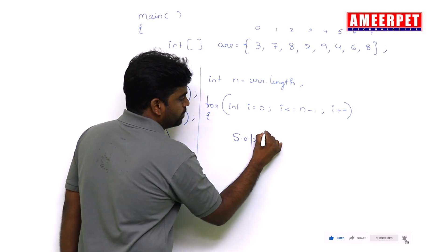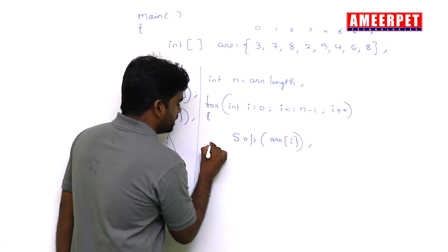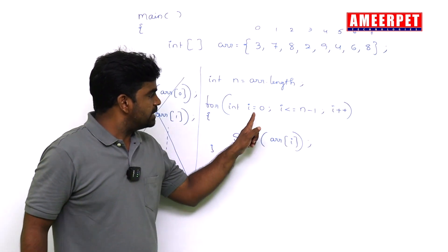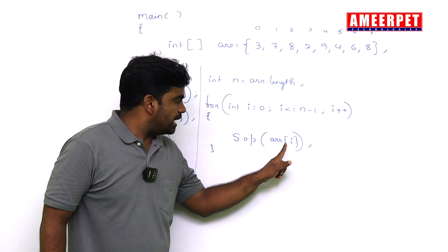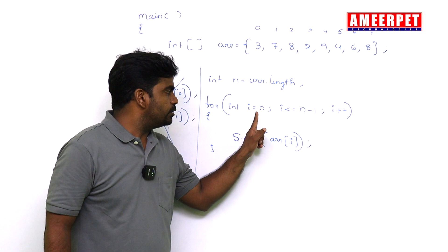System.out.println ar[i], which is nothing but ar[0]. First, what is it? i value is 0, so ar[0]. Next i value becomes 1, ar[1]. i value becomes 2, ar[2].